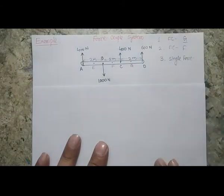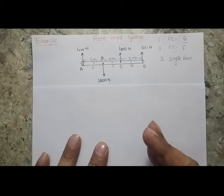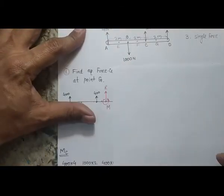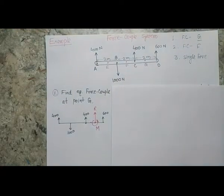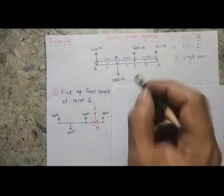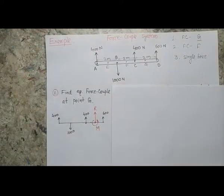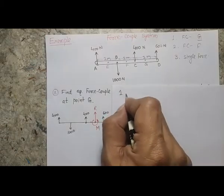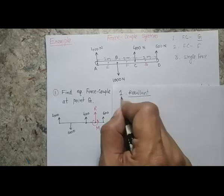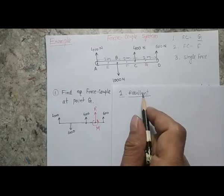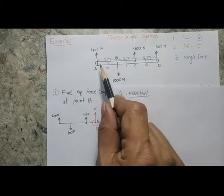Let's start with Case 1: finding the force couple system acting at point G. The first step when finding a force couple system is always to find the resultant of all forces. Please remember — the first step is to get the resultant of the forces.